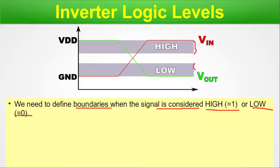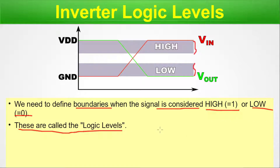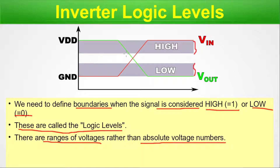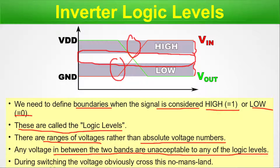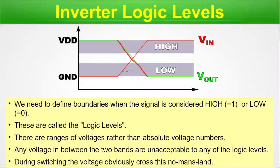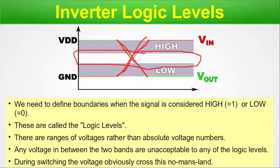These boundaries are called logic levels and are ranges of voltages rather than absolute voltage numbers. Any voltage between the two bands is unacceptable by the logic level — that forbidden region is not accepted. During switching, the voltage obviously crosses this no-man's land. When switching happens — from the high band to the low band — the line crosses through no-man's land momentarily, and here at this point the switching operation is happening.